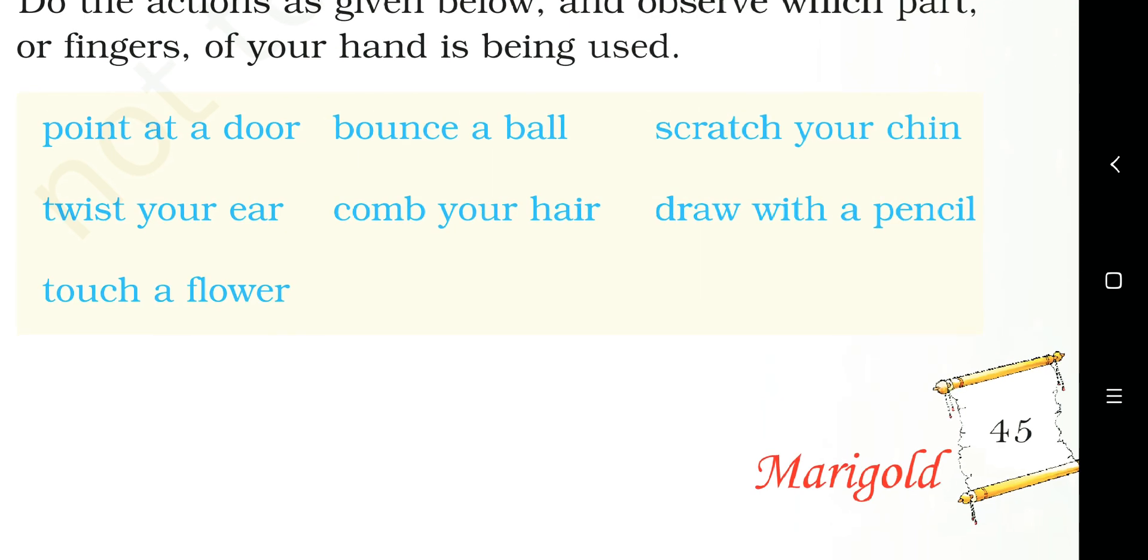Next one is touch a flower. So touch a flower, I use my index finger and my middle finger and my ring finger. So I use these three fingers to touch a flower. You can touch a flower and observe your fingers or hands. Some of you might be using their palm also to touch the flower.